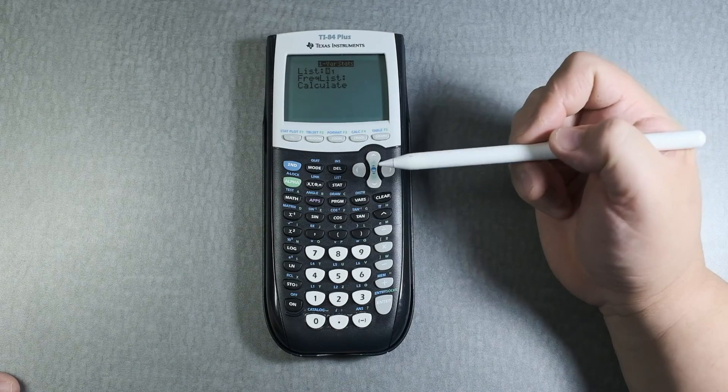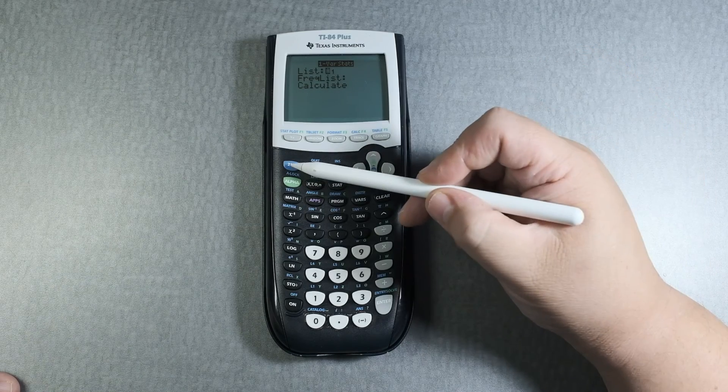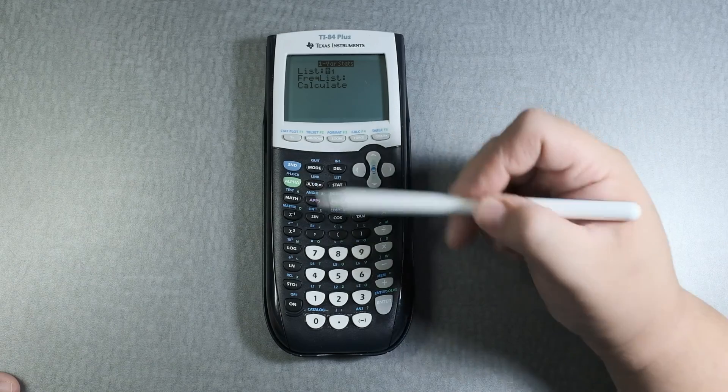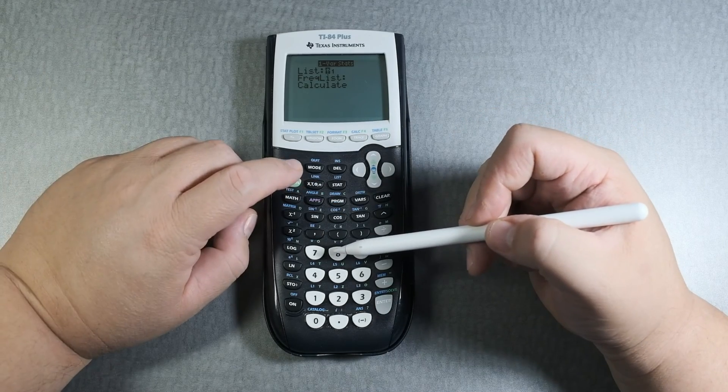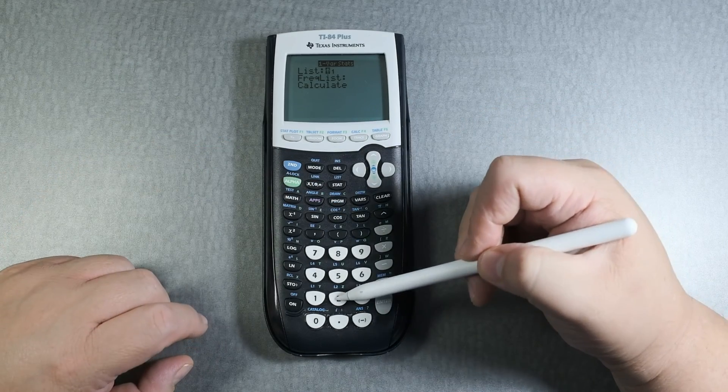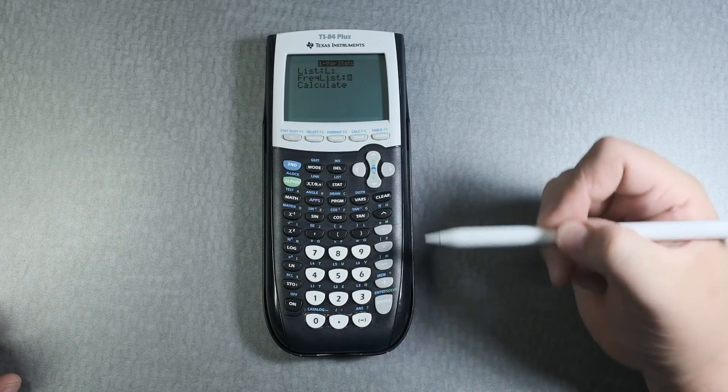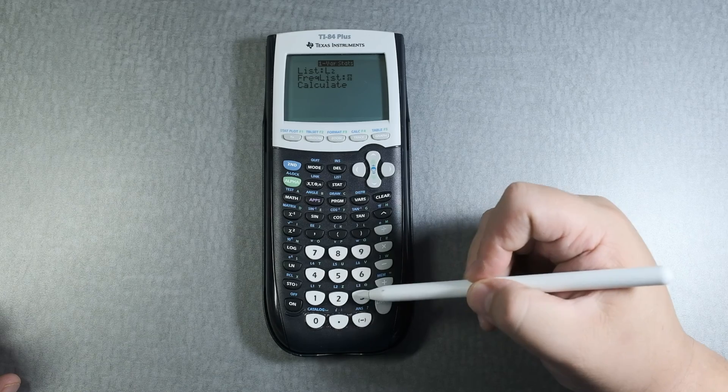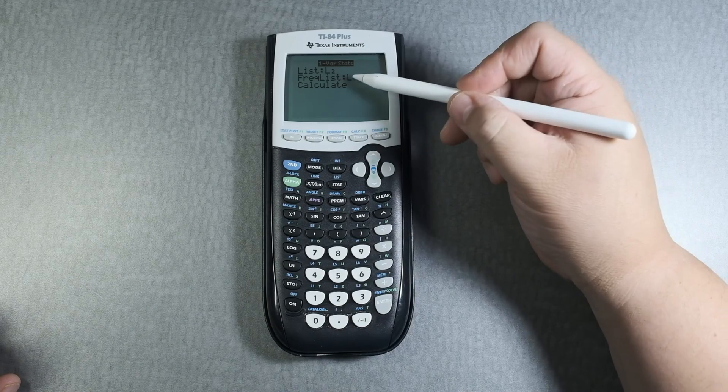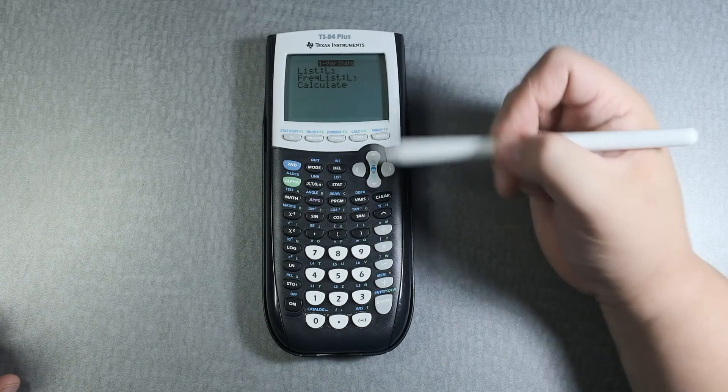List. So it's going to be L what? The data is L2. Okay I'm going to make sure. Yeah L2. And then the frequency after we enter will be L3. The frequency is L3. The data is in L2.